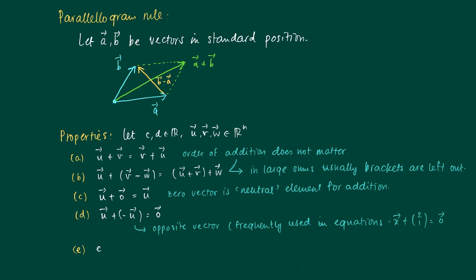Okay, e. Well, if we have a scalar and the sum, so we have a scalar c times the sum of two vectors, then we may calculate this as c times u plus c times v.